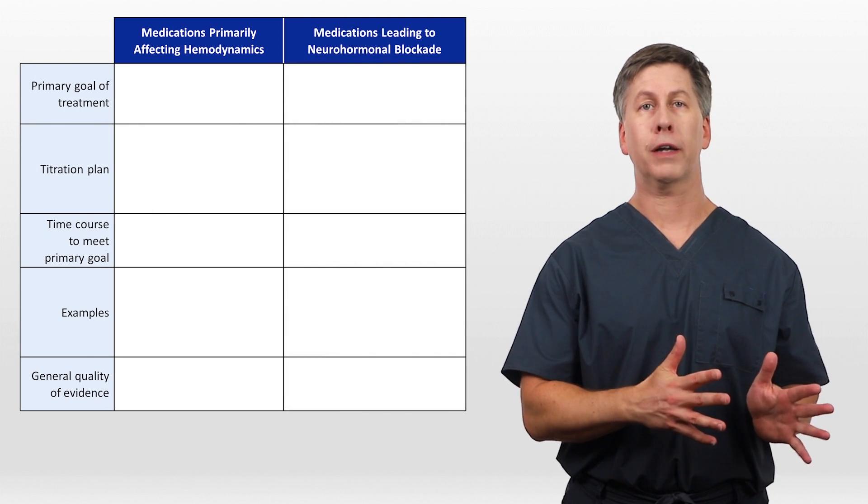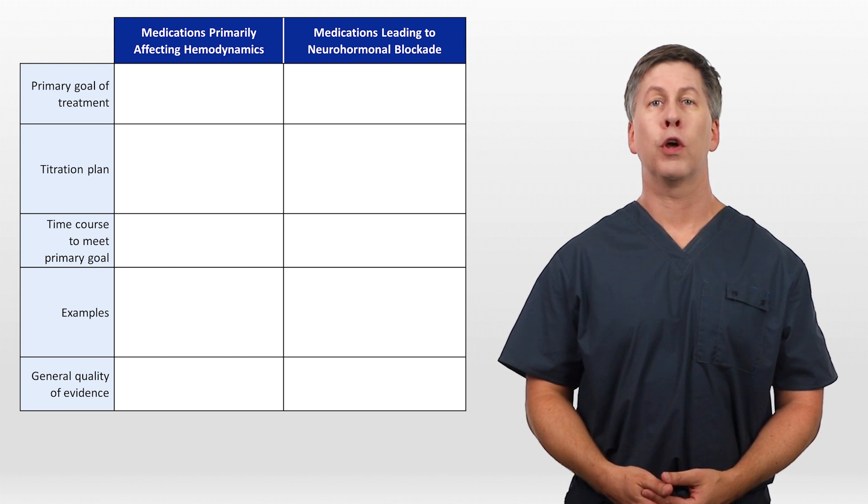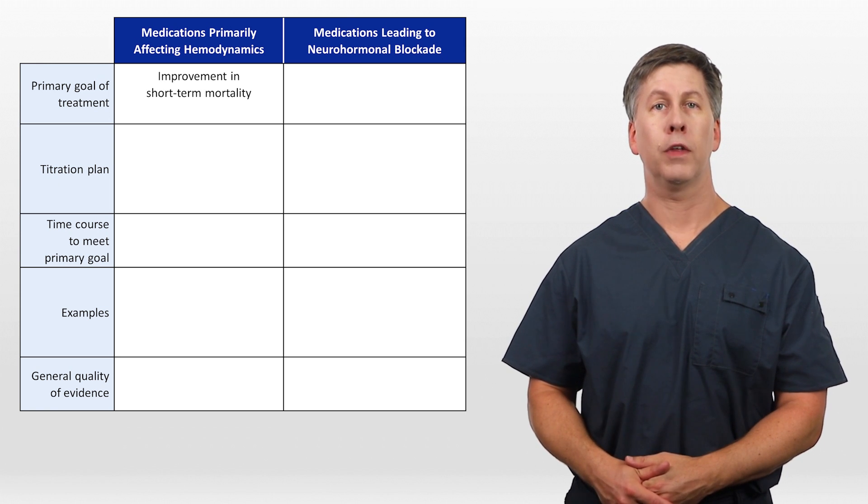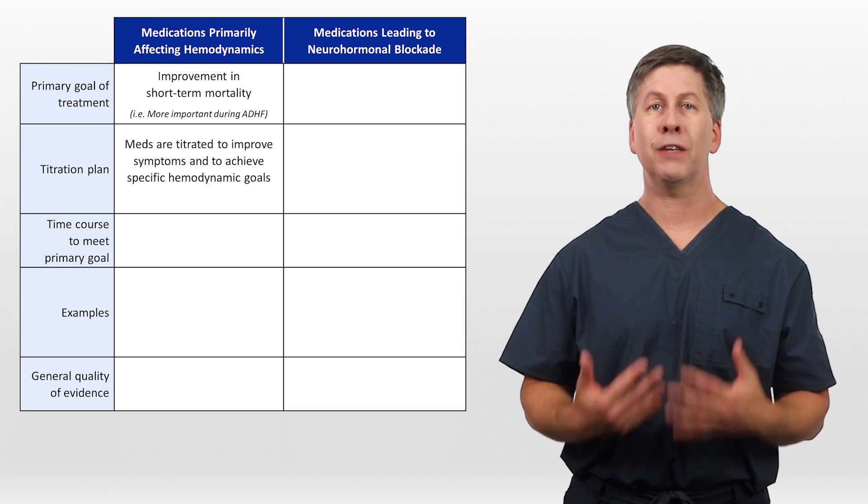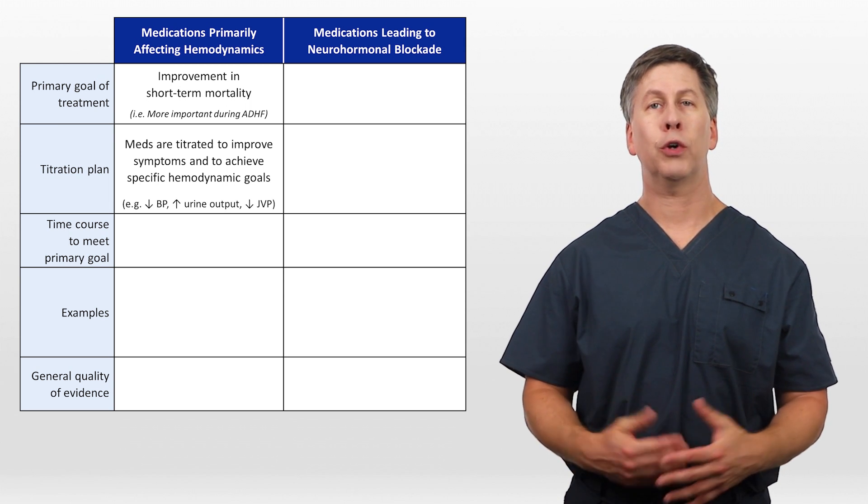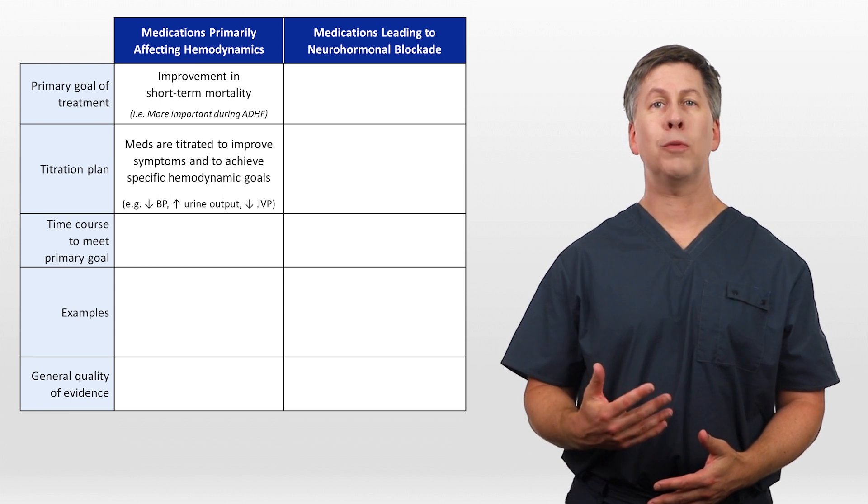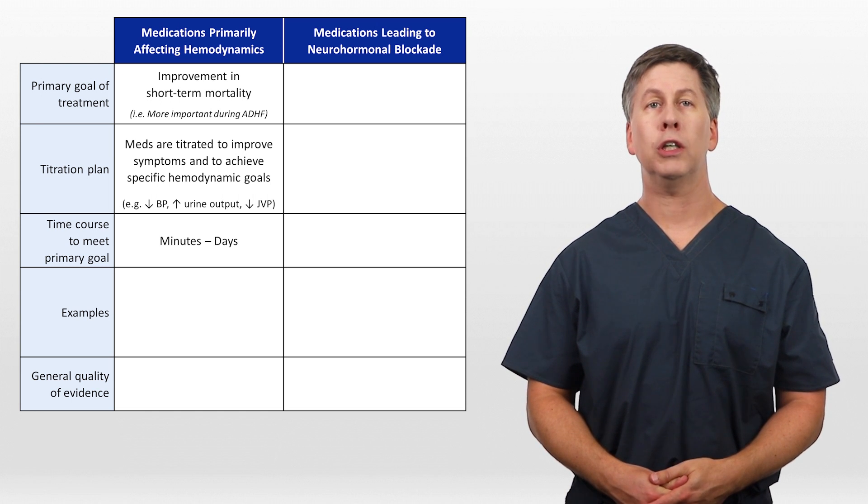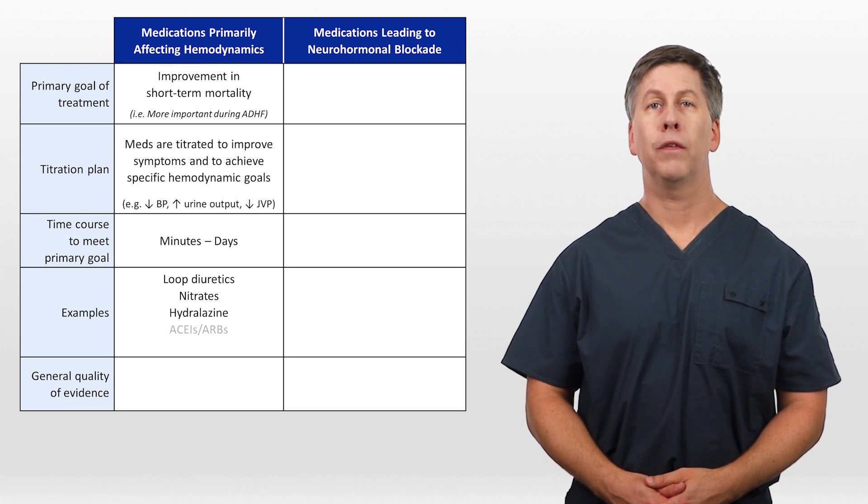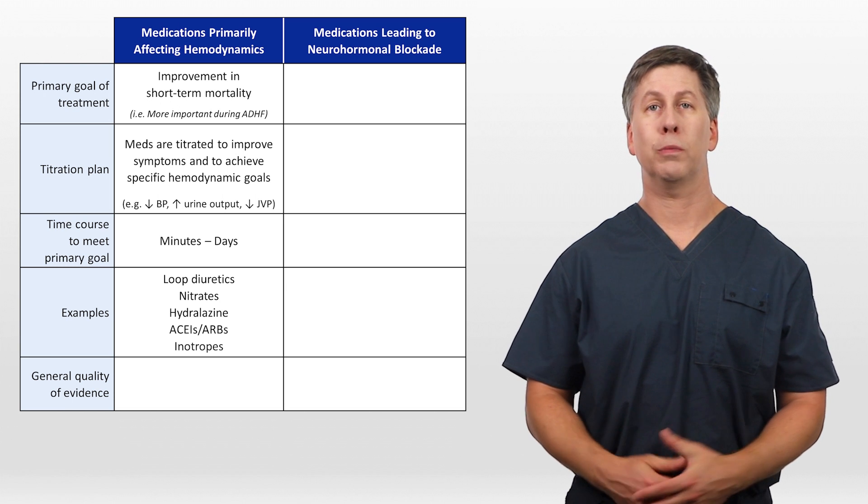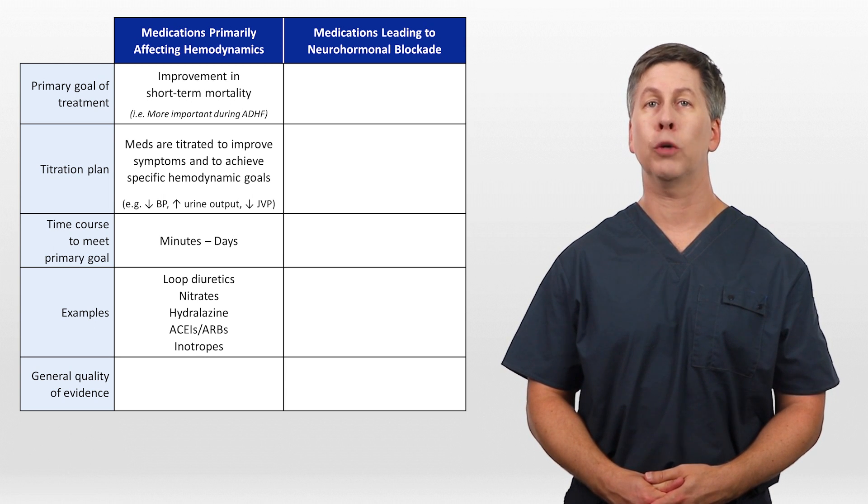One way to classify heart failure treatment that's relatively specific to HFrEF is to categorize medications by those which primarily affect hemodynamics and those which lead to neurohormonal blockade. The primary goal of those affecting hemodynamics is an improvement in short-term mortality, meaning these are the meds that are more important during acute decompensated heart failure. They are titrated to improve symptoms and to achieve specific hemodynamic goals such as lowering blood pressure, increasing urine output, and decreasing JVP. When they are used, we intend to meet those goals within minutes to days. Examples include loop diuretics such as furosemide, nitrates, hydralazine, ACE inhibitors and angiotensin receptor blockers, and inotropes. Despite strong consensus, the quality of evidence supporting their use is relatively low.